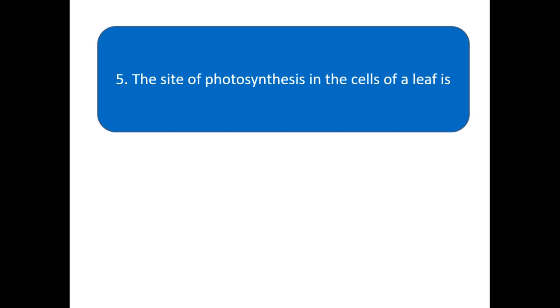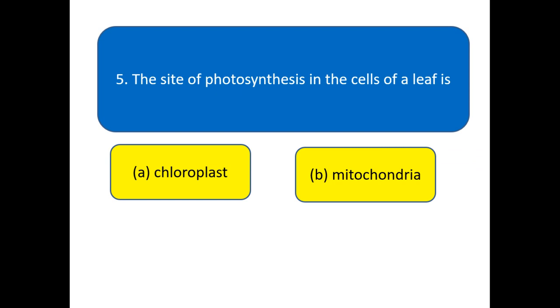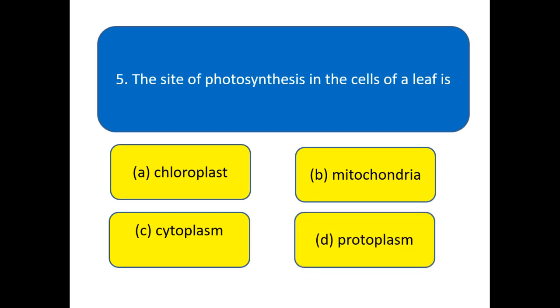Your next question is: The site of photosynthesis in the cells of a leaf is? Options: chloroplasts, mitochondria, cytoplasm, chromoplast. Choose the right option for this question.